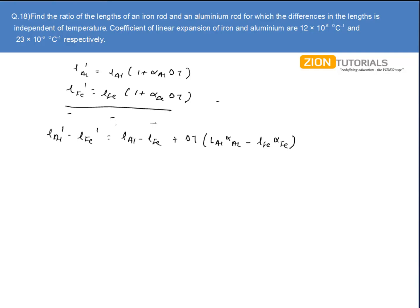It is given that we have to calculate the ratio at an instance when the difference in length is independent of temperature. If the difference in length is independent of temperature, then obviously L'_Al - L'_Fe has to equal L_Al - L_Fe, that is, the coefficient of ΔT has to be zero.